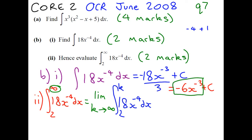The only difference here is I'm going to write it as 6 over x cubed, because that's what the negative power does. So we've got the limit as k goes to infinity of minus 6 over x cubed. And we need to evaluate between k and 2.